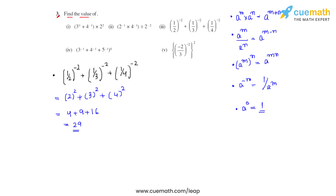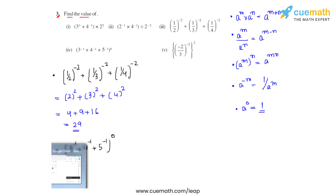The fourth bit says 3 raised to negative 1 plus 4 raised to negative 1 plus 5 raised to negative 1, and this whole expression has been raised to 0. The trick here is that whatever we simplify inside will ultimately be raised to 0, and since anything raised to 0 is 1, we can directly write the answer as 1.